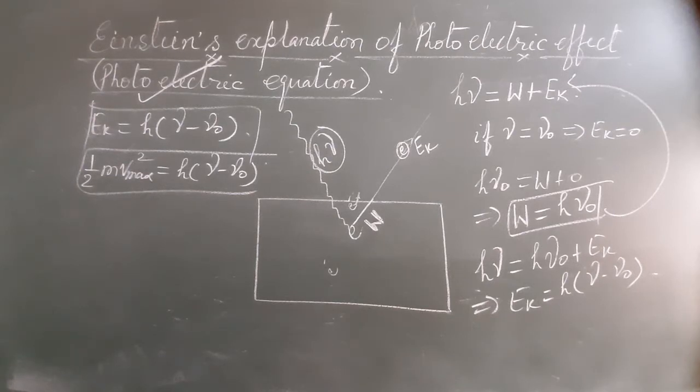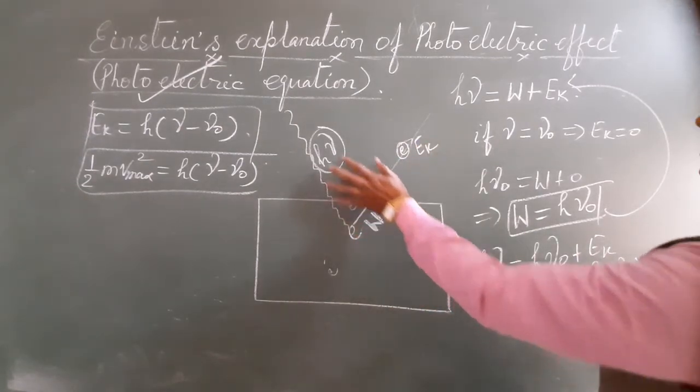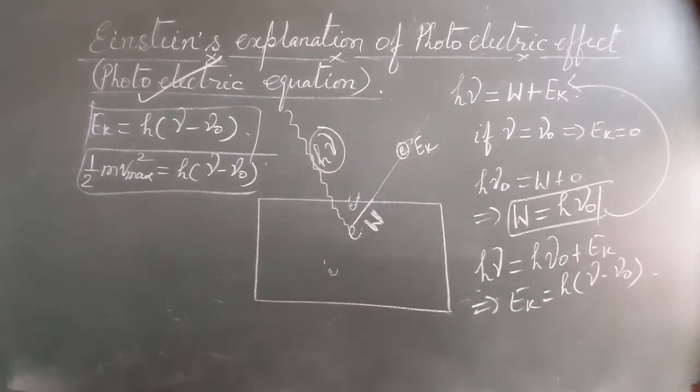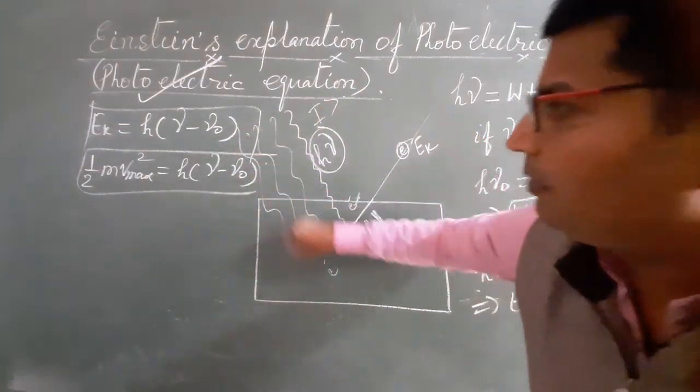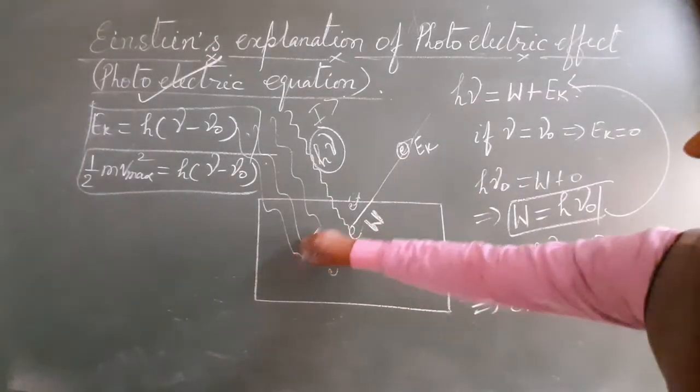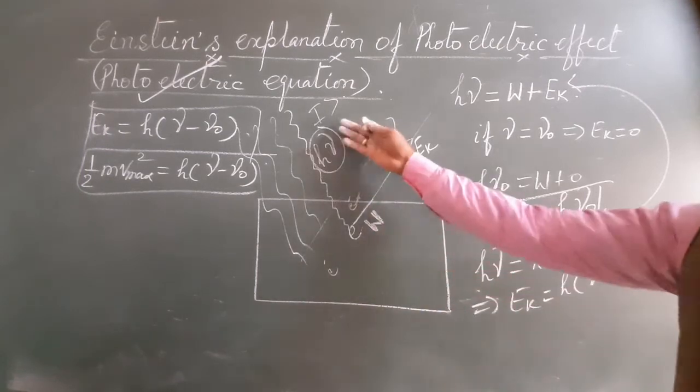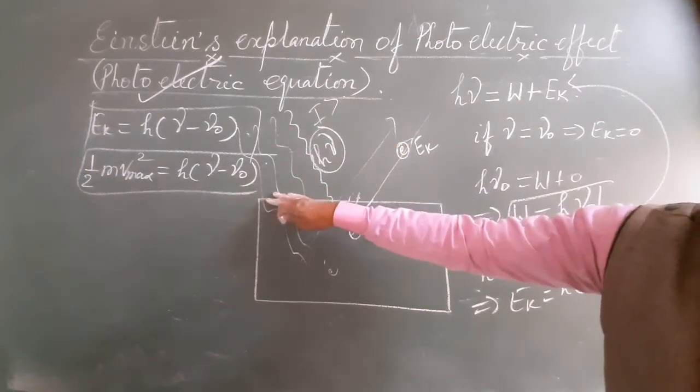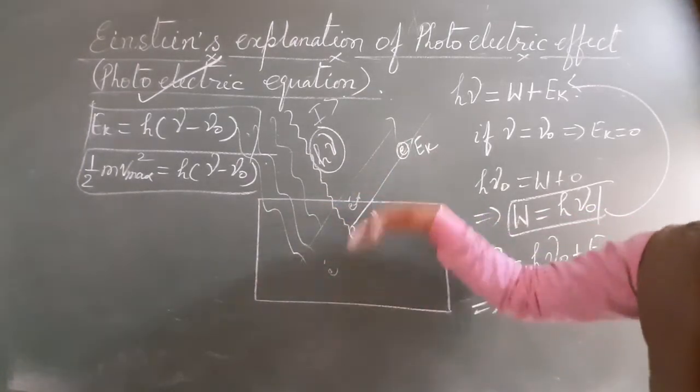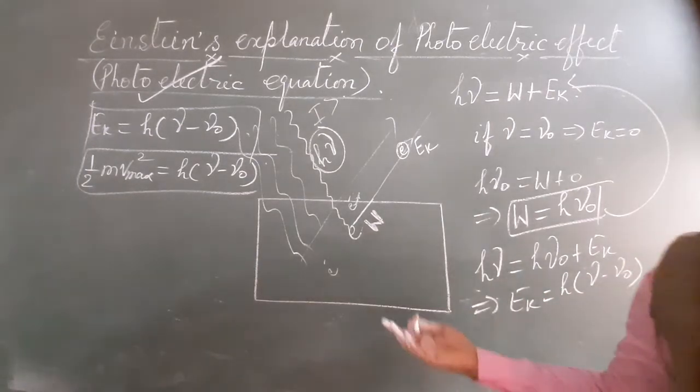What is the first law of photoelectric emission? The rate of emission of photoelectron is directly proportional to intensity of light. Jib aap intensity ko increase karo ge, to number of photon increase hoon ge. And when number of photon increase, then number of emitted electrons increase. This is the first law.